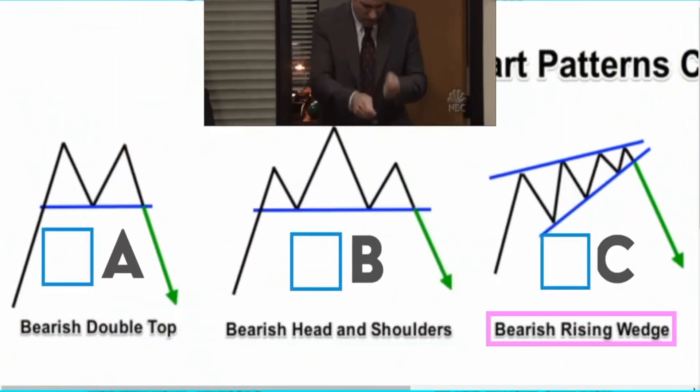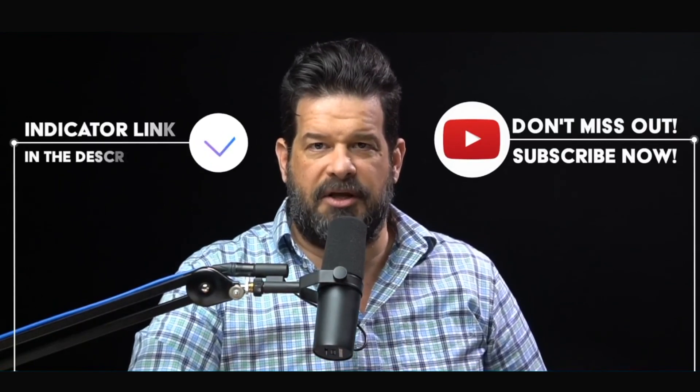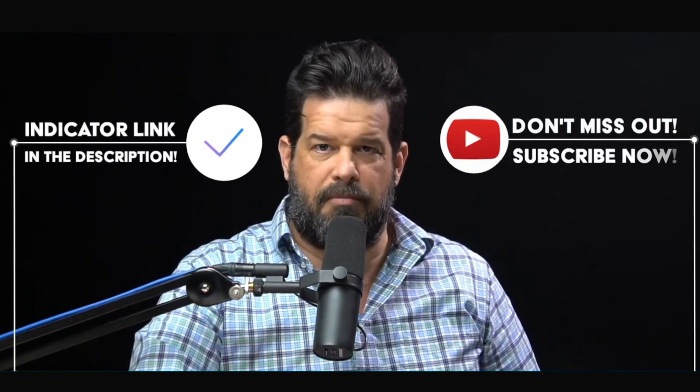Drum roll — if you picked the head and shoulders pattern, you're right. 85% of the time it works out, making it the top reversal pattern for short selling. If you're tired of watching the market go up and down and not knowing exactly where to get in, imagine using the polynomial channel for yourself — having this software identify exactly where to enter and where to take your targets. If you like these trade setups, subscribe. If you want to use the polynomial channel to find great places to short sell the market, click on the link in the description. Either way, I wish you the best in trading.